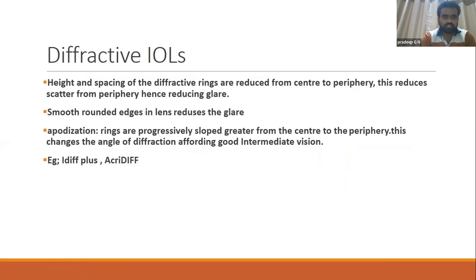The height and spacing of the diffractive rings are reduced from center to periphery. This reduces glare through smooth, rounded edges. A technique called apodization progressively reduces ring height from center to periphery, changing the angle of diffraction to offer good intermediate vision. Examples of apodized diffractive IOLs include the IQ plus and AcrySof.